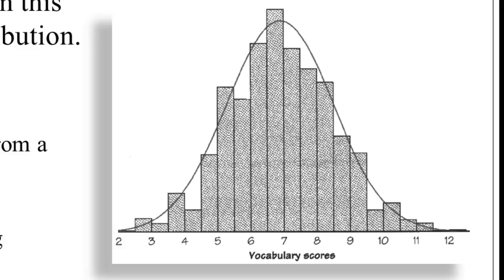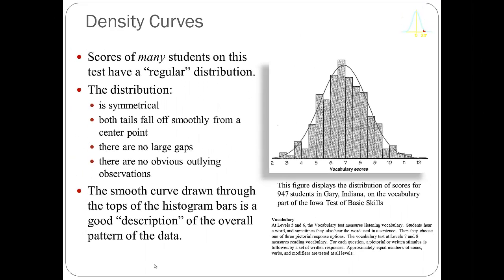I've superimposed a smooth curve over that, which is our density curve. Density curves are when we have continuous variables. This particular distribution has scores that pile up in the middle and trail off near the tails. The distribution is symmetrical with no large gaps or obvious outlier cases. This looks to be approximately normally distributed. The smooth curve I've drawn is a pretty good description of these actual data.